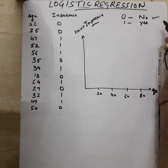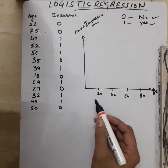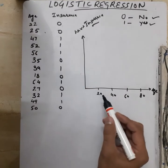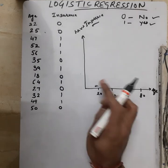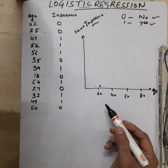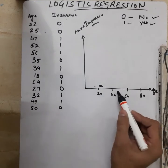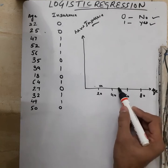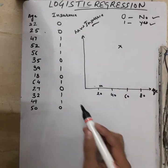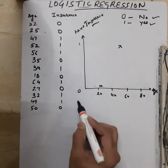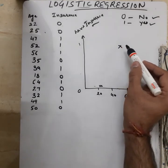Zero represents that the person doesn't have insurance and one represents that the person has insurance. Using this data, if I try to plot these points: for age 22 the person does not have insurance, so it's plotted at zero. For age 25 again somewhere here. For age 47, that person has insurance, so I've plotted that at one.